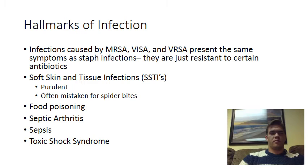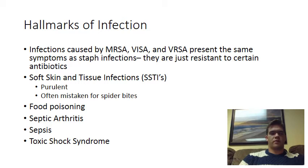A third way you can be infected by S. aureus is if it infects a joint — septic arthritis — where the bacteria infects one specific joint. You'd experience redness, swelling in the joint, and extreme pain in the joint, and sometimes a fever as well. This is not a life-threatening condition typically, as long as it's treated.